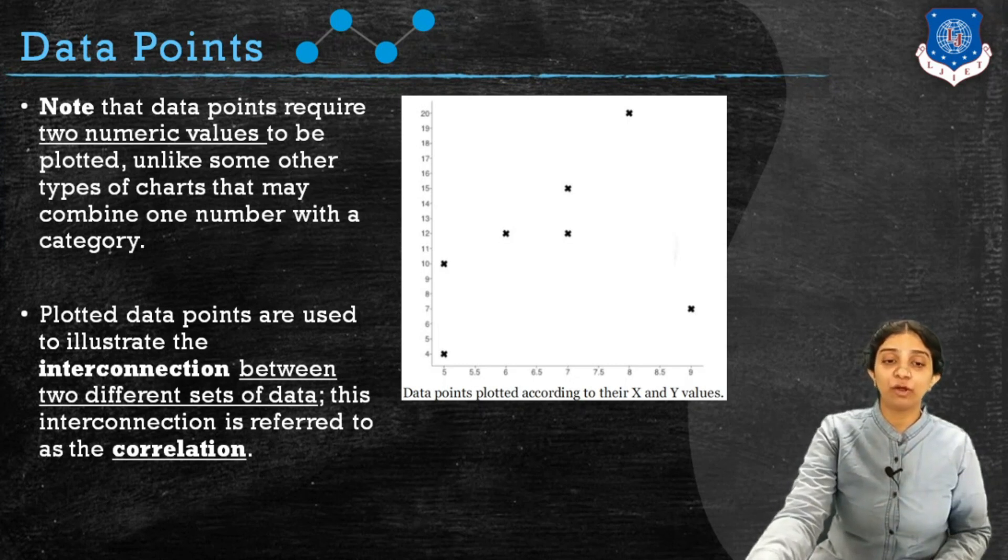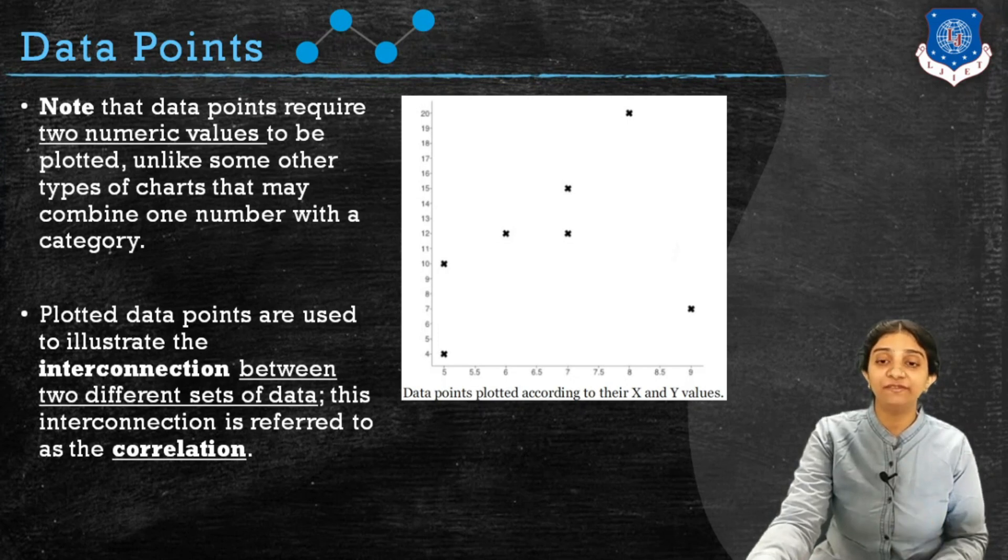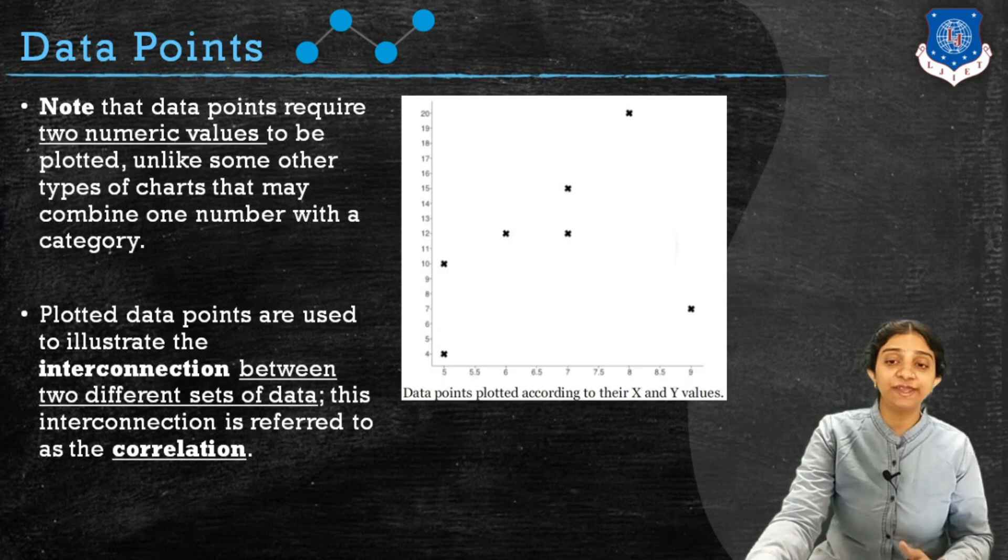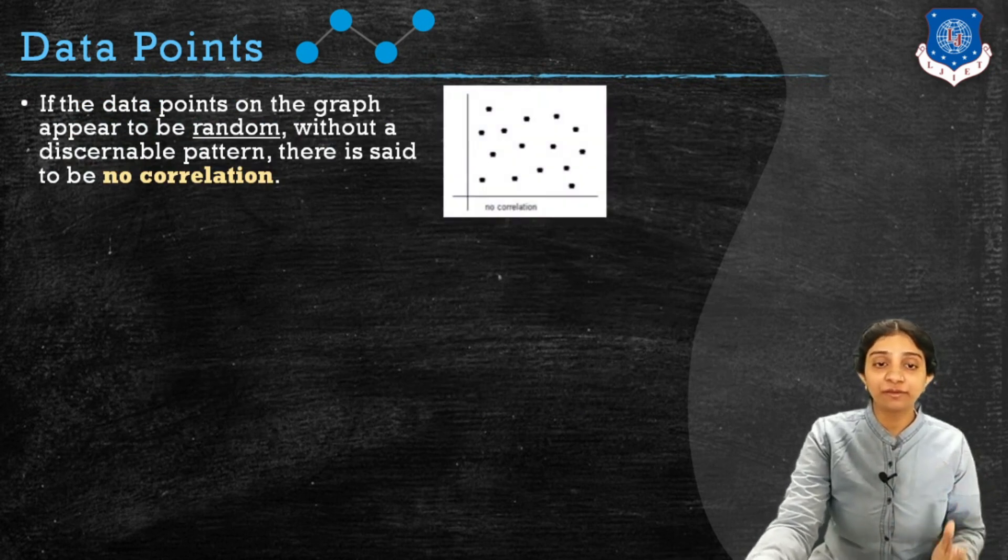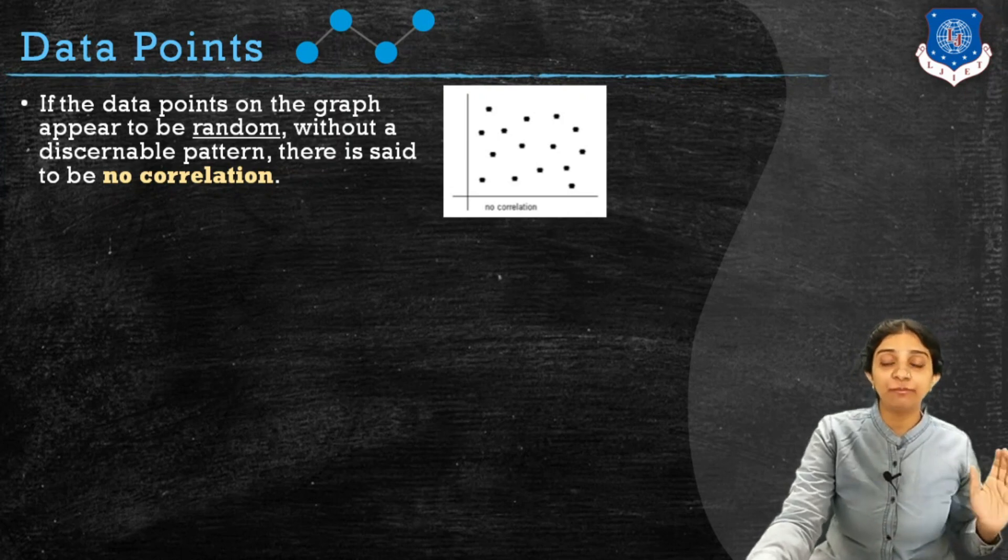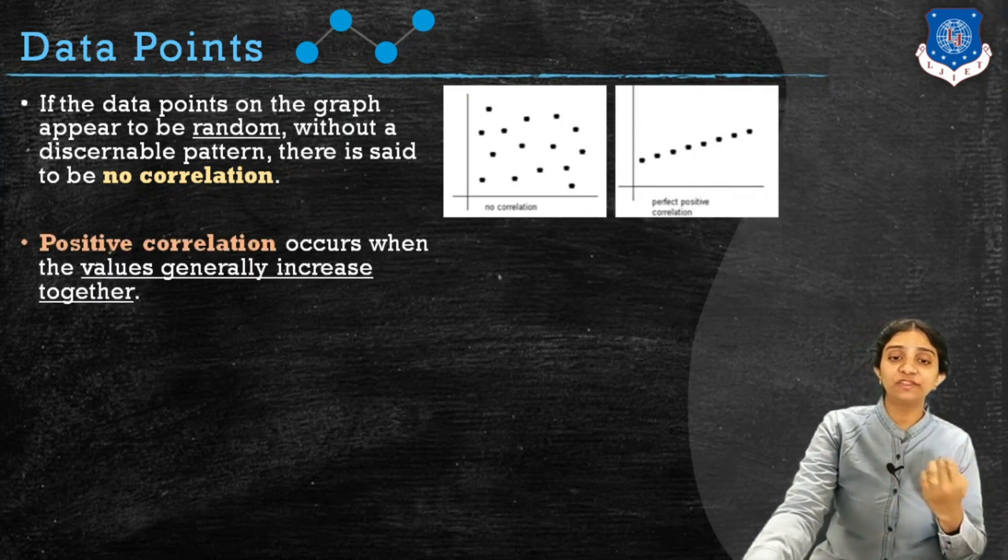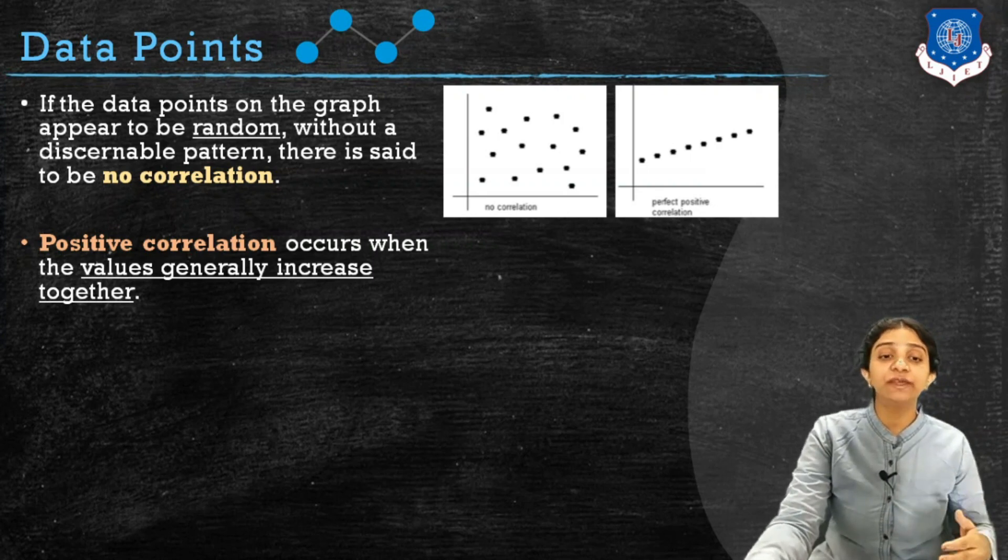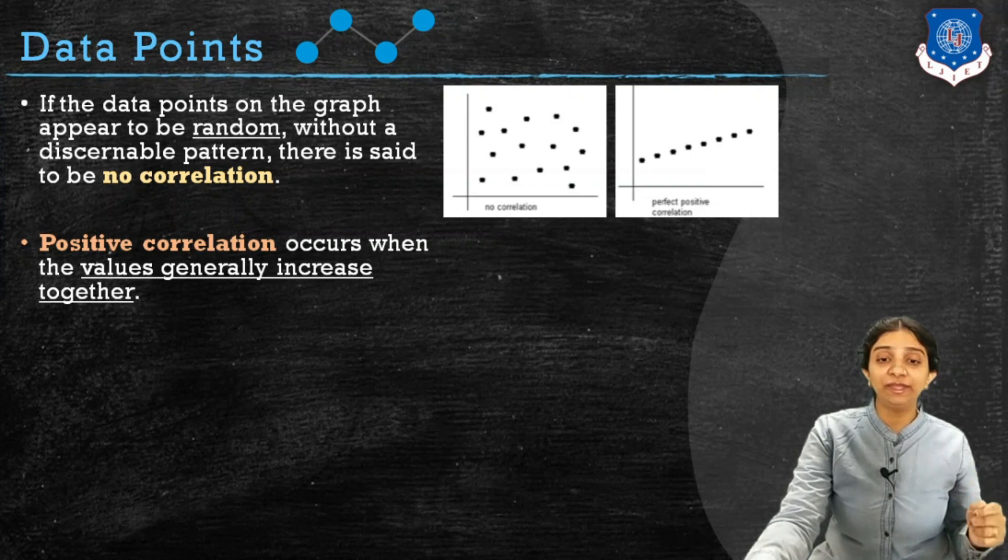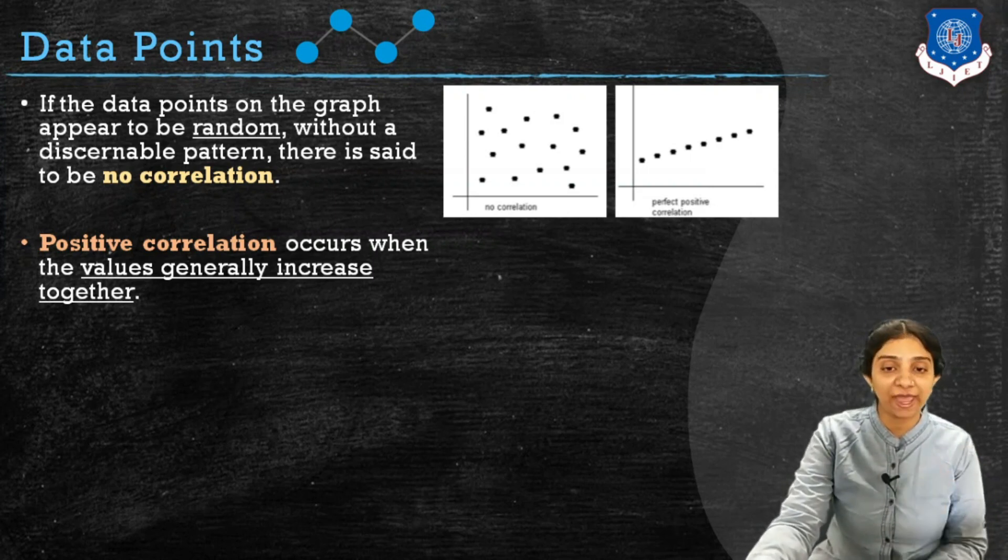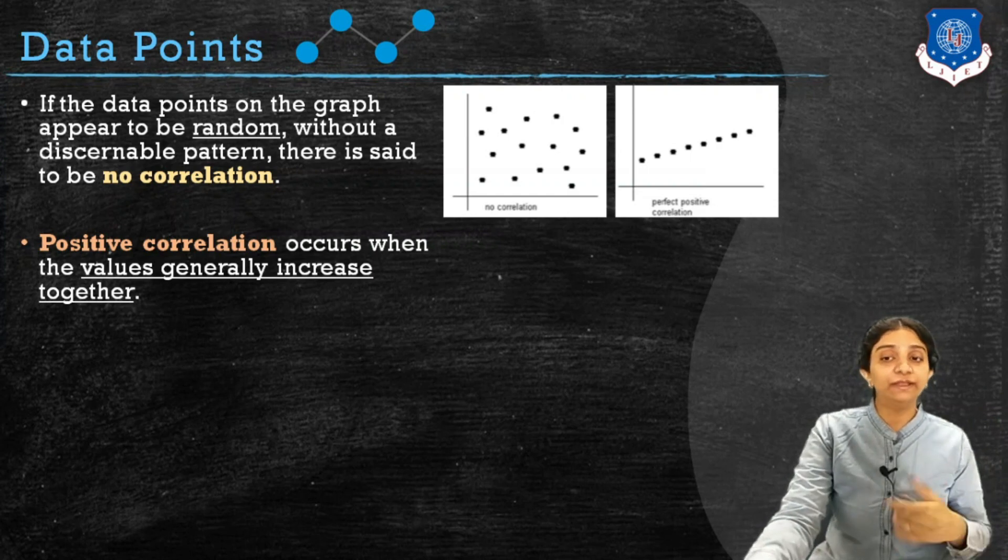The data points we have plotted are used to show or identify interconnection between these sets of data points. The interconnection between these data points is called correlation. If data points on a graph appear very randomly without any particular pattern, we say there is no correlation among the data set. There is positive correlation in a data set when values generally increase together for both axes. If a value on the X axis increases, we will have some increase in the value of the Y axis. In this case, data points will be plotted in a particular upward fashion, called positive correlation.